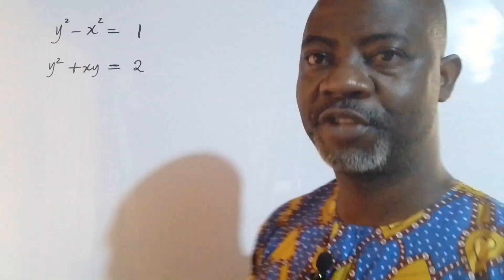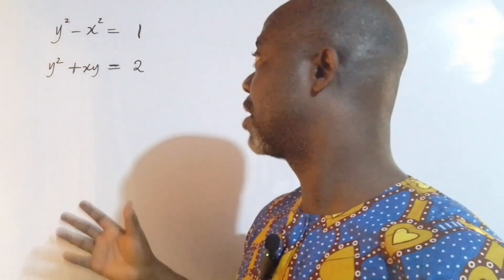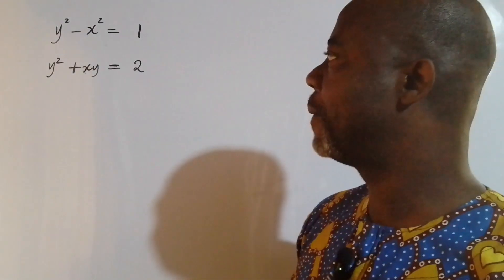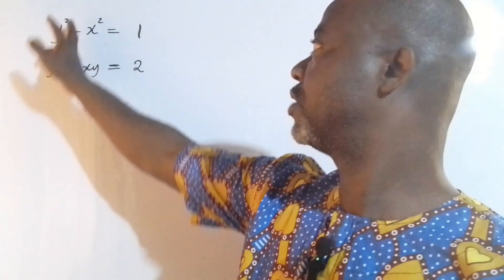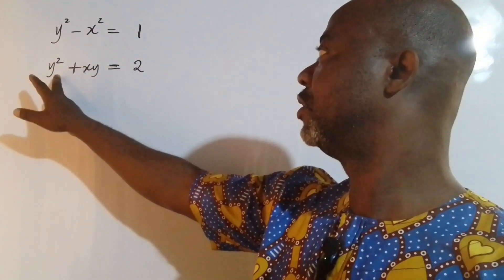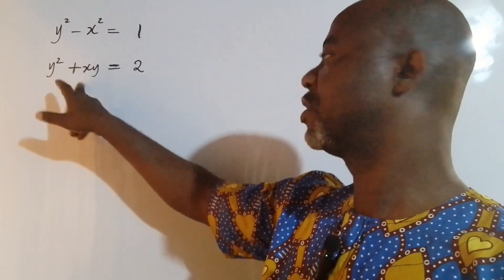Hello guys, welcome back to my YouTube channel. We have this beautiful pair of simultaneous equations to consider. We have y squared minus x squared equal to 1 — that's equation 1 — and then we have y squared plus xy equal to 2.